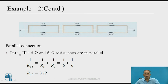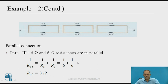For the third part, 6 Ω and 6 Ω are in parallel. Their equivalent resistance: 1/Rp3 = 1/R1 + 1/R2 = 1/6 + 1/6. Therefore, Rp3 = 3 Ω.